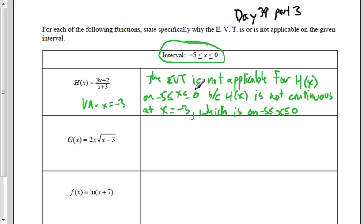We determined that Extreme Value Theorem is not applicable for the function h of x on the closed interval. If I wrote this in interval notation via brackets, because it's less than or equal to. If I had something that looks like 3 to 7, that's considered the open interval. We're looking at the closed interval from negative 5 to 0. Because h of x is not continuous at x equals negative 3, and that falls on the interval.